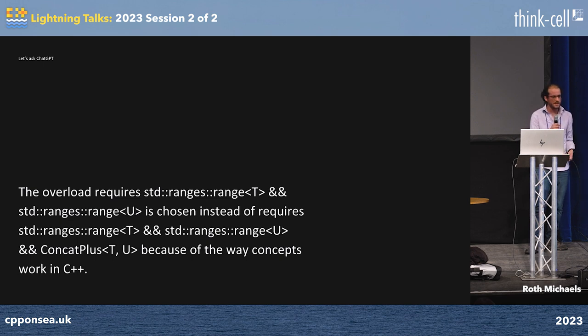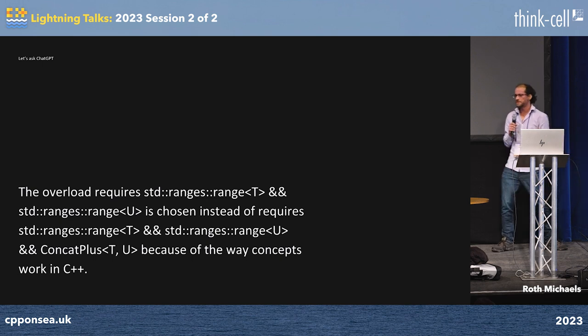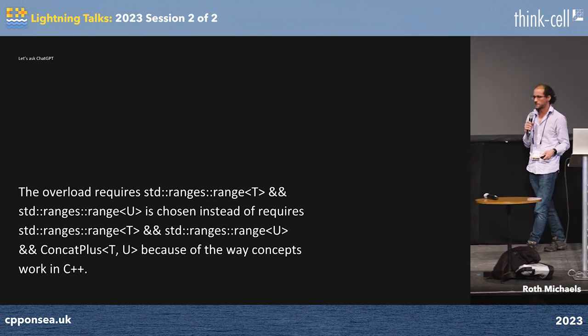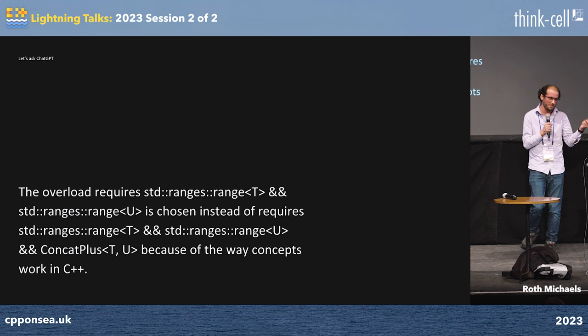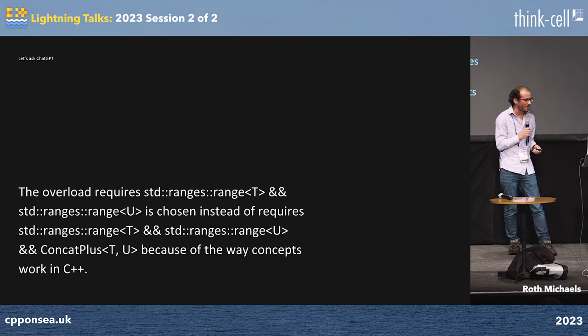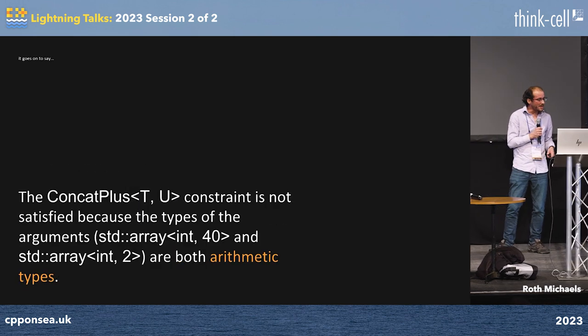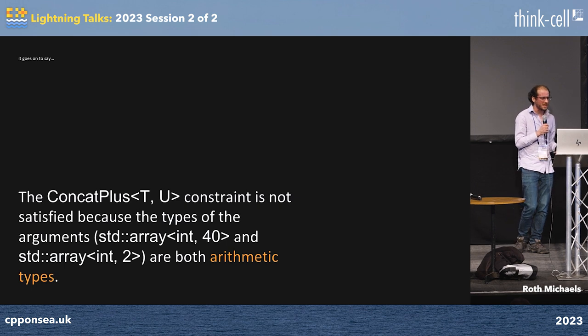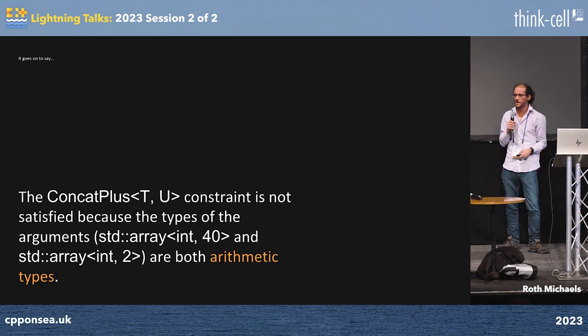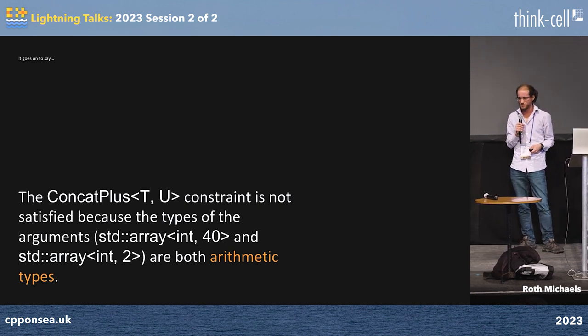I asked ChatGPT, and it said 'it's because of the way concepts work.' I asked it to be a little more helpful and bugged it some more. And then it said, 'this constraint is not met because array is an arithmetic type.' I was like, okay, great — you don't know what you're talking about.